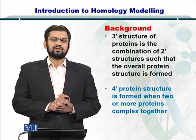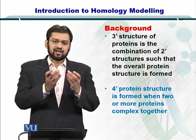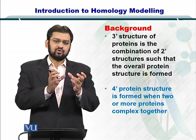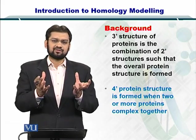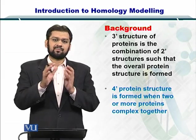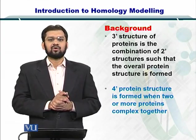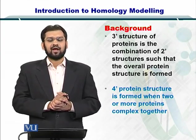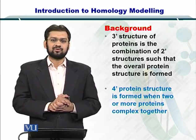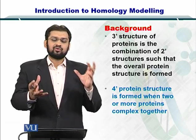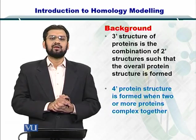Next is the tertiary structure of the proteins, or the three prime structure. The secondary structure elements — that is helices, beta sheets, loops, and coils — come together in various conformations. Once the secondary structures combine to take an overall form, this is the tertiary structure or the protein structure. Then the quaternary structure of proteins is formed when two complete proteins come together and make a complex through protein-protein interaction.